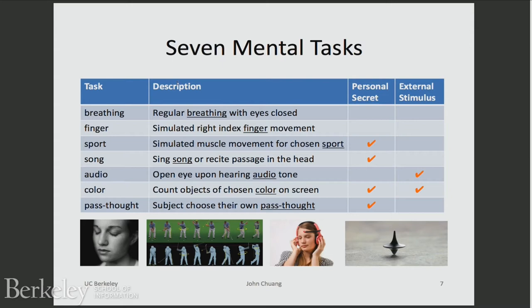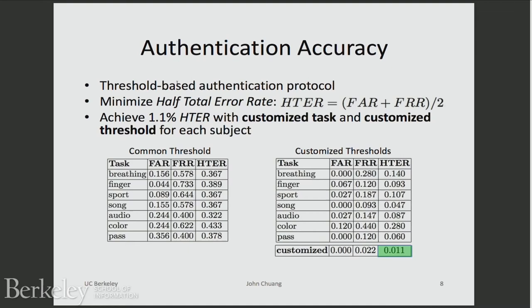The tests come in a variety of ranges. In some cases we set up a baseline — just close your eyes and breathe. Some are motor imagery tasks, where you imagine moving some part of your body without actually moving those muscles. Some are associated with auditory tasks, like imagining singing a song. Others involve an external stimulus — an audio or color task. And finally, one where you are free to choose whatever thought you want to think: could be your cat, could be your grandmother, could be anything. Some of these tests allow you to choose a personal secret that you can employ.